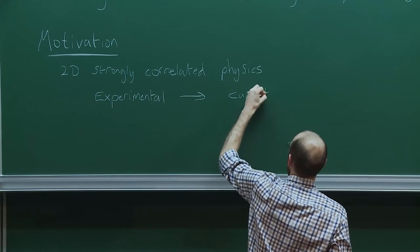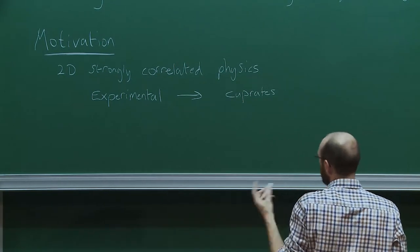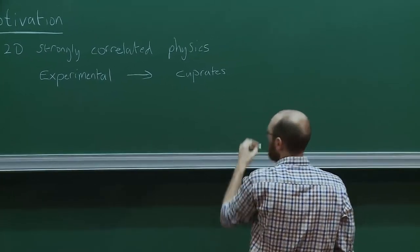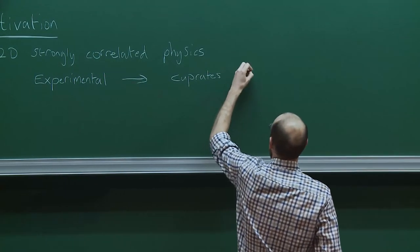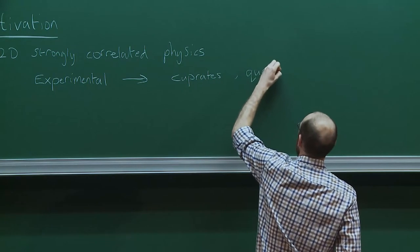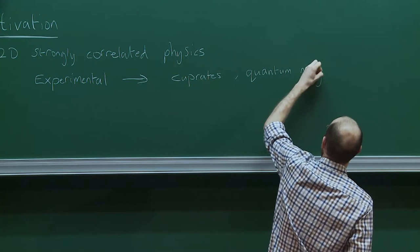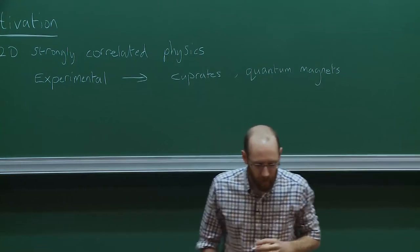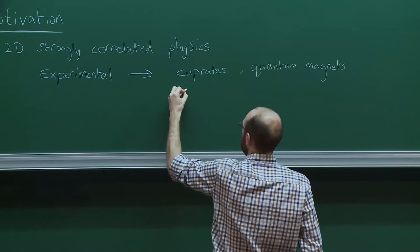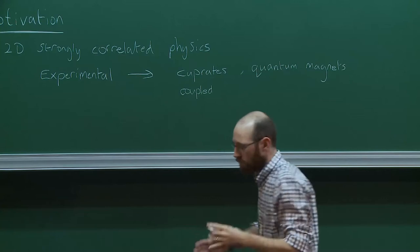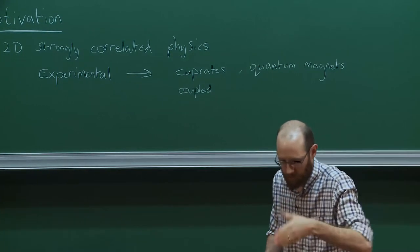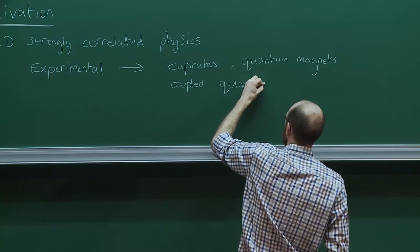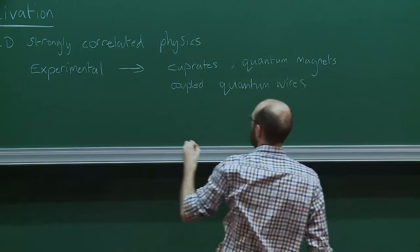The cuprates have been interesting for a long time and remain extremely difficult, although we heard from Philippe Corbeau that there's some very exciting progress on the 2D Hubbard model. There are also layered quantum magnets — things considered to be possible manifestations of spin liquid behavior, like cesium copper chloride. Then there are systems of coupled quantum wires: some kind of substrate where someone lays down many 1D channels but with tunneling between them.